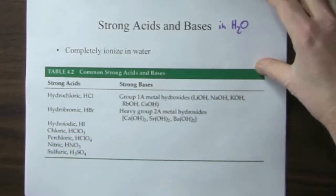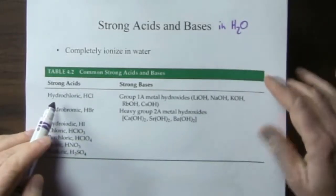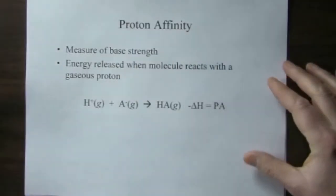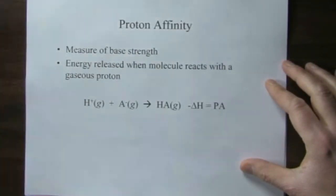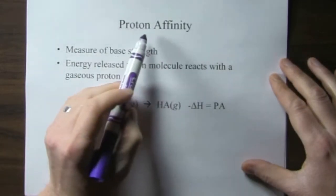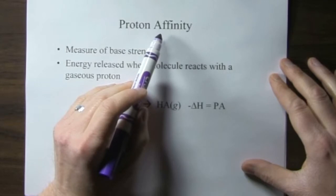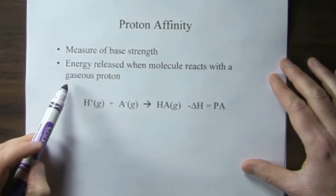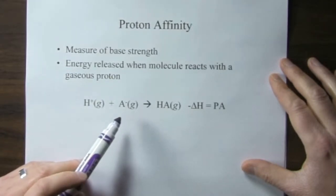So how can we measure the strength of, say, hydrochloric acid? It's stronger than water, it reacts with water. And so, one definition, thermodynamic definition, is the proton affinity. The proton affinity is going to give us, actually, base strength, because Bronsted-Lowry says the base accepts the proton. And it's defined as the energy released when the molecule reacts with the gaseous proton, and the molecule is in the gaseous state as well.